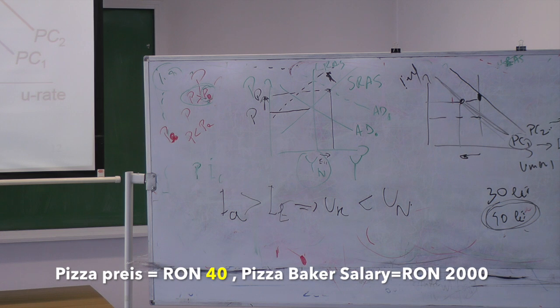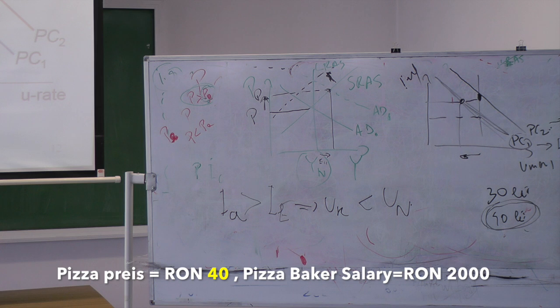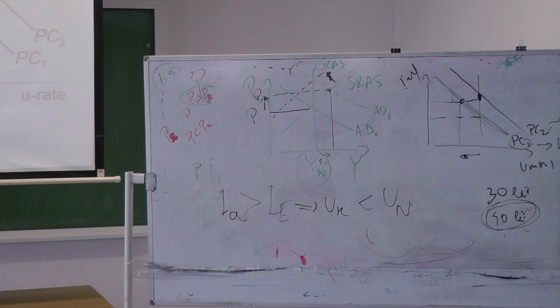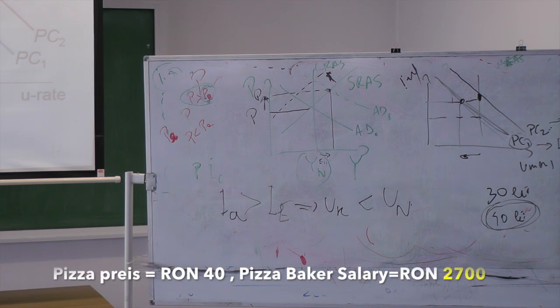Now, the baker is getting angry because everything else in the economy is more expensive. So he will ask for an increase of, how much was this increase, 30% increase. So he will also want the 30% increase to his salary. So he will be like, how much is this? 2,700 lei, let's say.